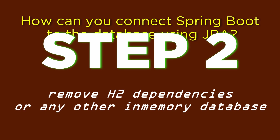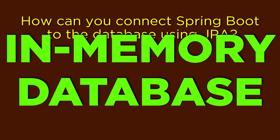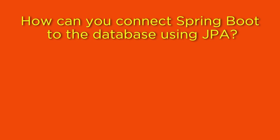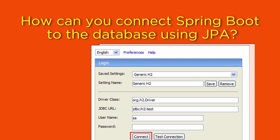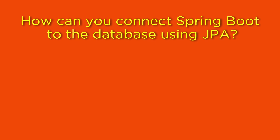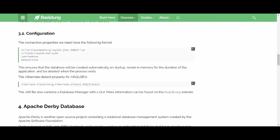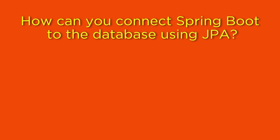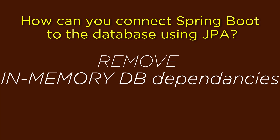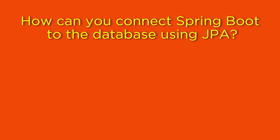The second step is you need to remove the H2 dependency from your pom.xml. H2 dependency gives you the advantage of using in-memory databases. An in-memory database uses system memory instead of disk space for data storage. When you run the application, an in-memory database is created, and when the application is closed, the in-memory database is gone. There are multiple in-memory databases you can use — for example, H2, HSQLDB, and Apache Derby. While using external databases, you need to remove these in-memory dependencies from your pom.xml, or at least set the scope of those databases to test.